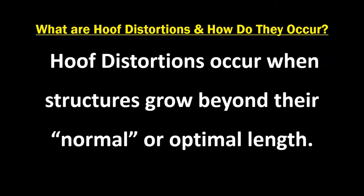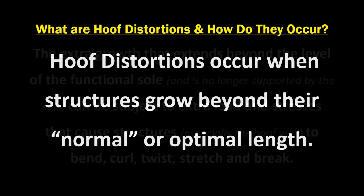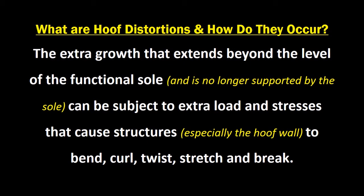What are hoof distortions and how do they occur? Hoof distortions occur when structures grow beyond their normal or optimal length. The extra growth that extends beyond the level of the functional sole and is no longer supported by the sole can be subject to extra load and stresses that cause structures, especially the hoof wall, to bend, curl, twist, stretch, and break.